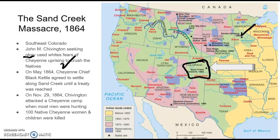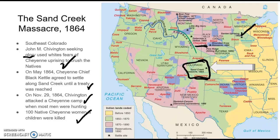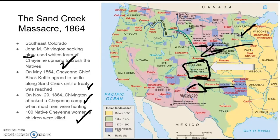In May 1864, the Cheyenne chief Black Kettle had agreed to settle along Sand Creek until a treaty was reached. Before the treaty was signed, on November 29, 1864, Chivington attacked a Cheyenne camp when most men were out hunting. He killed over 100 Cheyenne women and children. It seemed, to some whites, that the savages and uncivilized peoples were not the Native Americans — rather it was whites like Chivington who were massacring innocent women and children. Whites believed that Natives were an impediment to civilization and progress, and so as whites moved west, Native Americans needed to be exterminated.